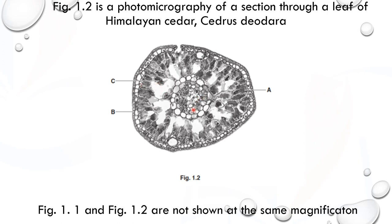B here is epidermis, just like in the first diagram. A here is palisade, and C here is spongy. If you are asked to draw the plan diagram, pause the video and try to draw it yourself. I'll try to draw it again.